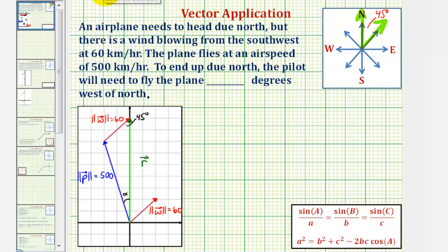So applying the law of sines, we can say the sine of 45 degrees divided by the length of the opposite side, which would be 500, must equal the sine of angle alpha divided by the length of the opposite side, which is 60.